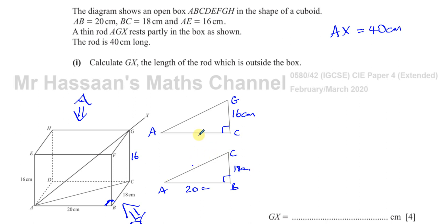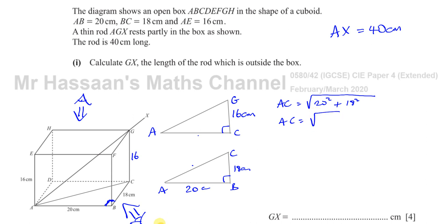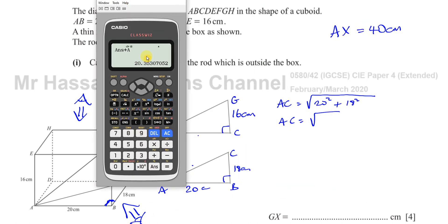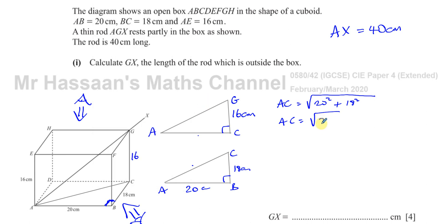Using Pythagoras' theorem in triangle ABC, AC squared equals 20 squared plus 18 squared, which gives 724. So AC equals the square root of 724. I'll leave it in that form — as the square root of 724 — because I'm going to square it again in the next step, so it will simply become 724.